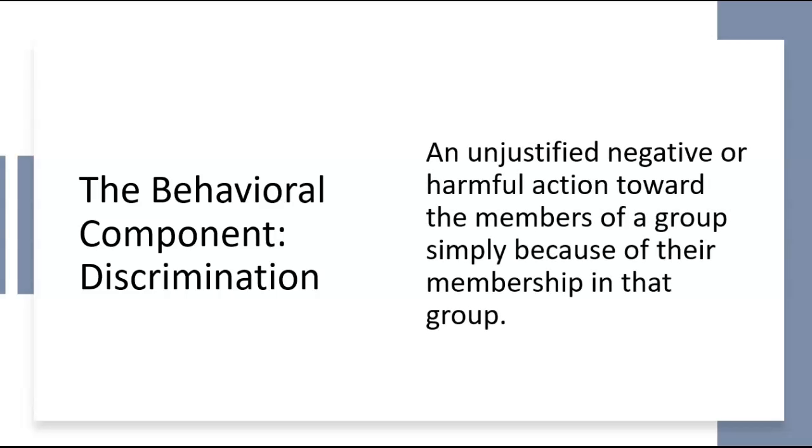Now we need to switch gears and add the behavioral component. Remember that these three components of prejudice do not function independently all the time — they are often combined in a system of prejudice and discrimination. The behavioral component is actual discriminatory behavior, doing things that harm other people. The textbook definition of discrimination is unjustified, negative, harmful actions toward members of a group simply because they belong to that group.